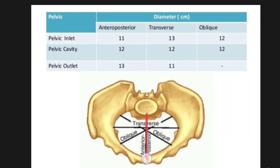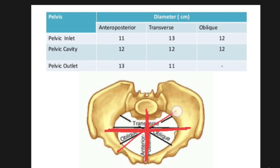Now the diameters in the pelvis. This length is known as the anterior-posterior diameter. This middle line is known as the transverse diameter, and the diagonal line is known as the oblique diameter — anterior-posterior, transverse, and oblique diameter.